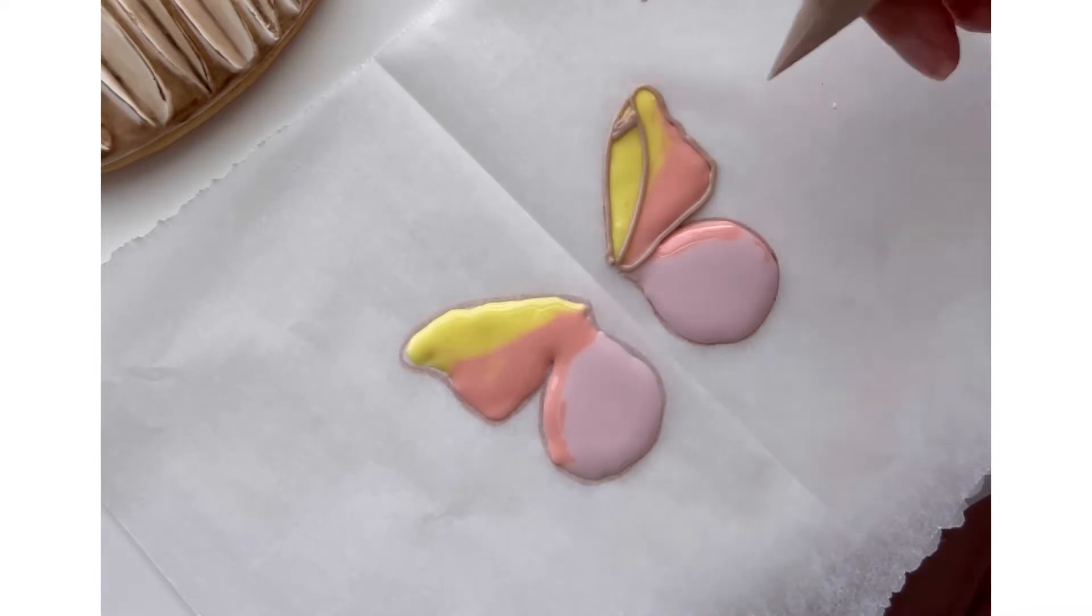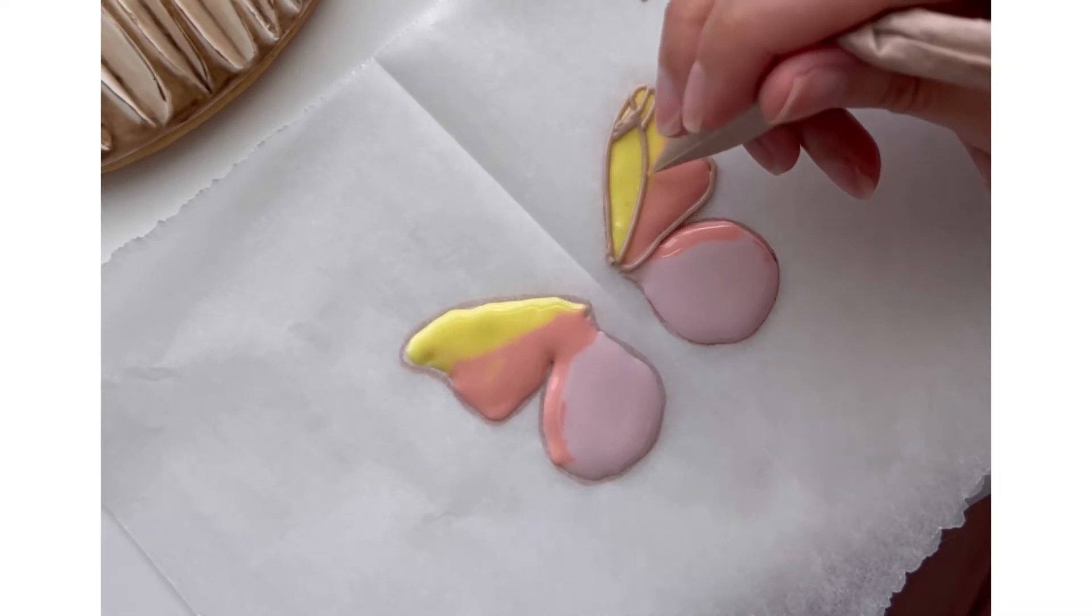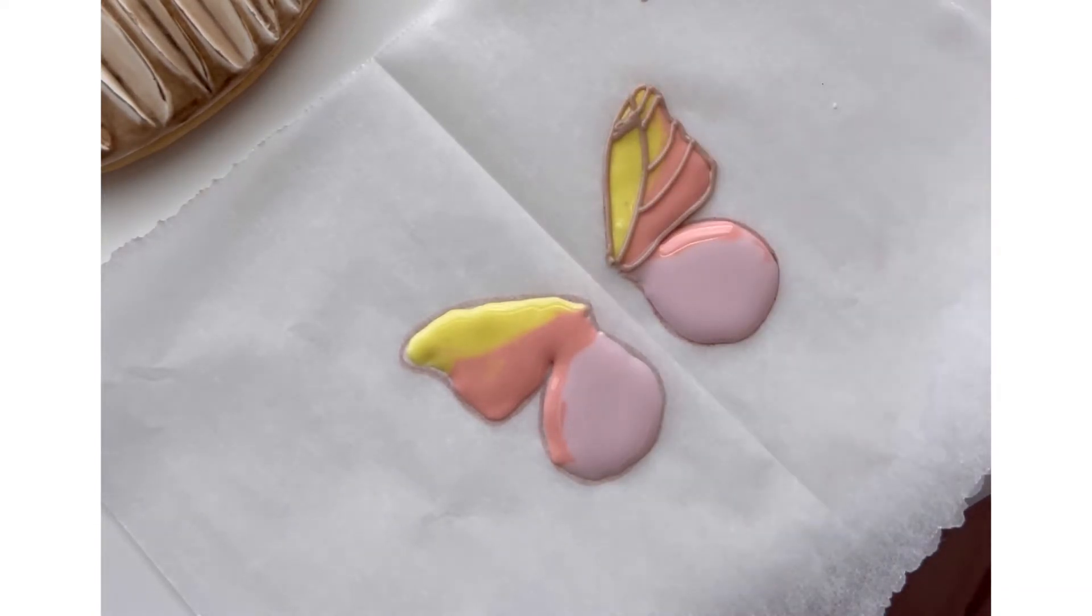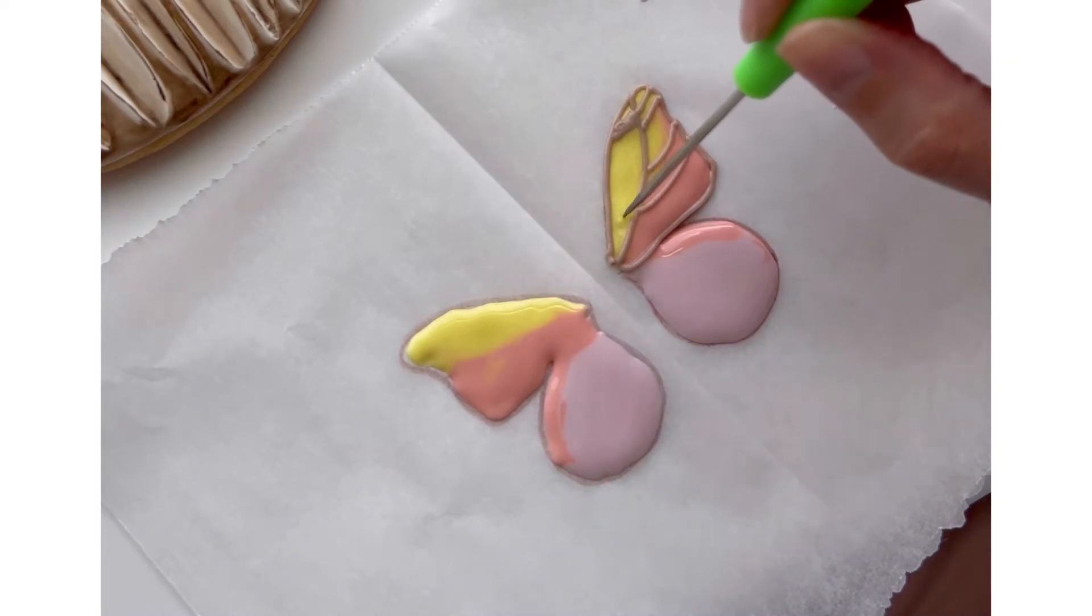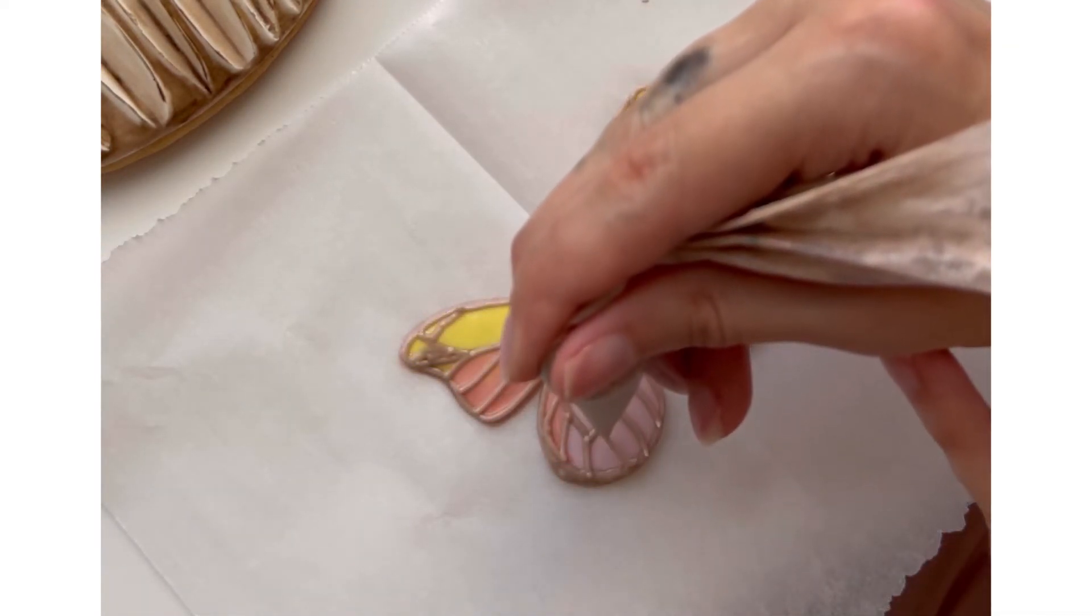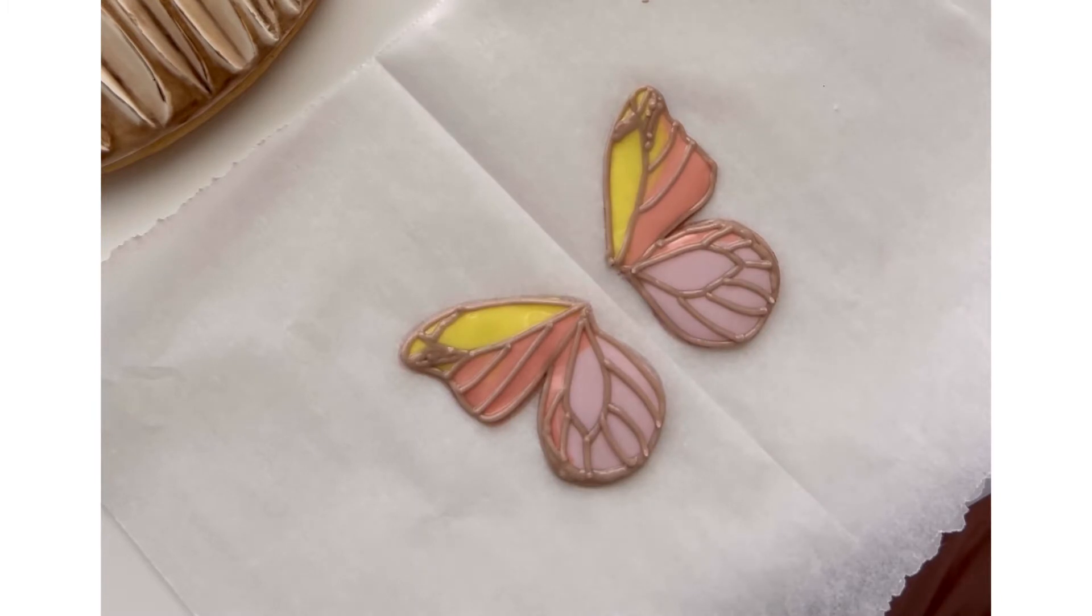Once I was done, I put this into my oven at 125 degrees on dehydrate mode for about 20 minutes. If you don't have a dehydrate mode or a dehydrator, you can let this air dry, but it will take several hours.